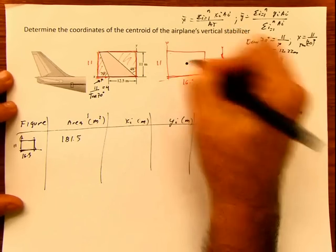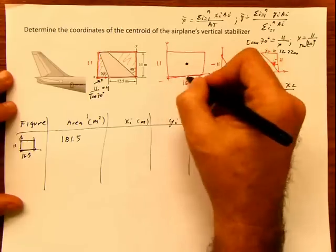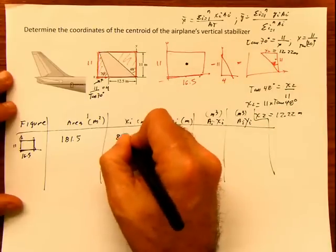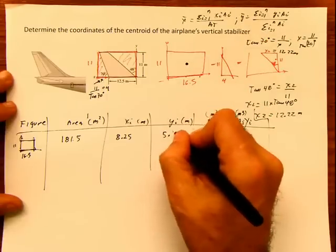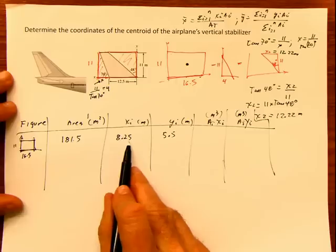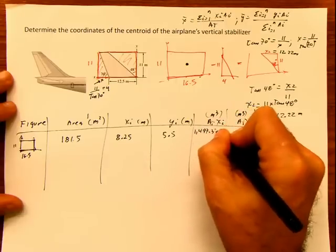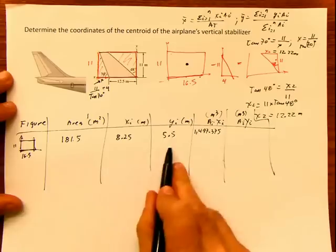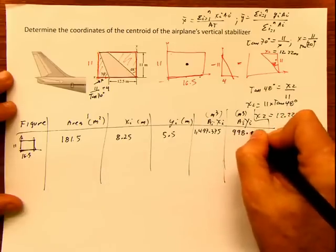x, well, the center of this figure is going to be located at the center. Where is the center? Half of the base, 8.25, and half of the height, 5.5. Now multiply this times this. And this is 1497.375. And this times this, and it's 998.25.